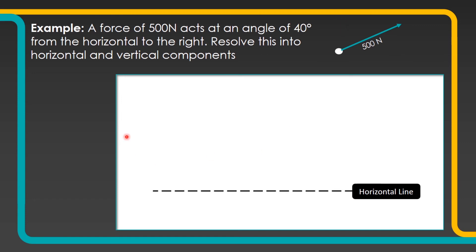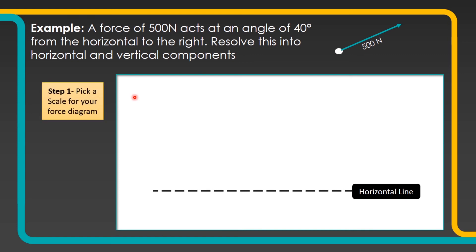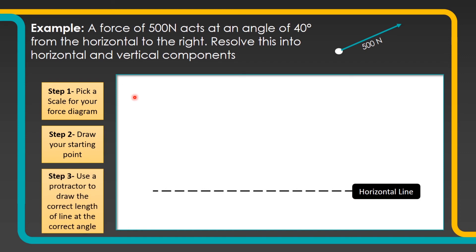The first step is going to be to draw this resultant force as a scale diagram on our piece of paper, then we can split it into its two parts. So my first step is to pick my scale, then do my starting point and use my protractor and ruler to draw the line in appropriately as we've done previously.